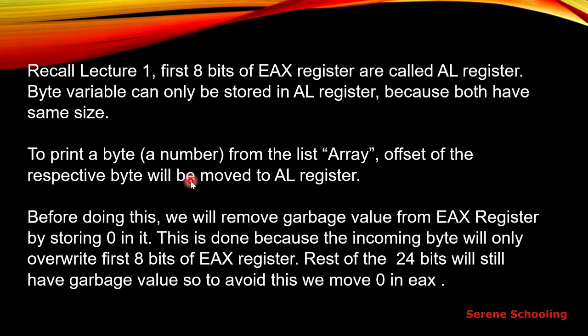One important thing before going to the coding part: in lecture one we studied that the first eight bits of the EAX register are called the AL register. The AX register is a 32-bit register. If we divide it into two parts we get the AX register, and if AX is further divided we get the AL and AH registers, where AL is the lower part of the AX register.